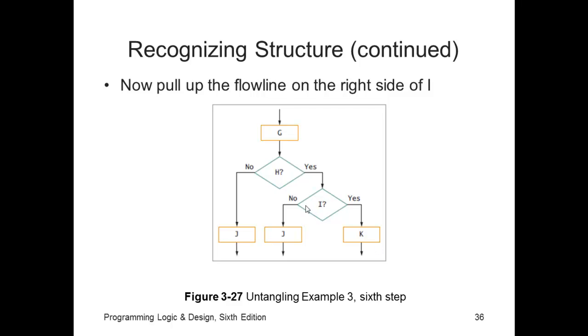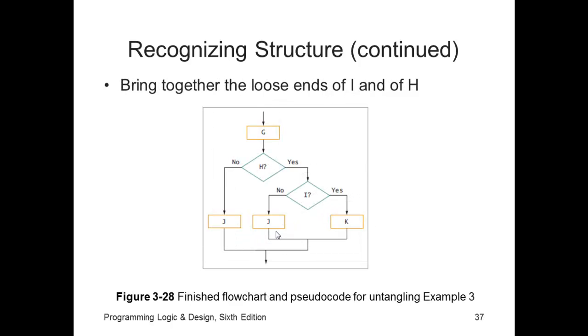Of course, if I evaluates to true, we're going to do process K. And then the final structure is this decision has a single entry and a single exit. This decision has a single entry and a single exit. We've now taken that example three, which was unstructured, and rewritten it as structured.